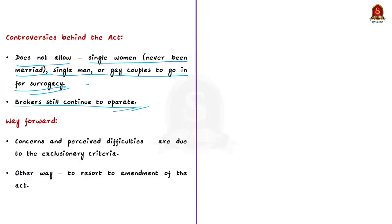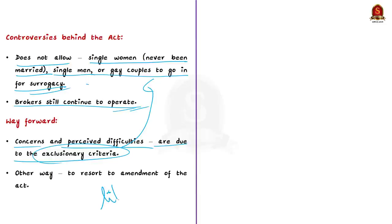What can be done to address the situation? The Surrogacy Regulation Act 2021 came into being on 25th of December 2021. The concerns and perceived difficulties resulting from the exclusionary criteria have already surfaced in the short time the act has been in operation. A path of litigation is possibly the course ahead.